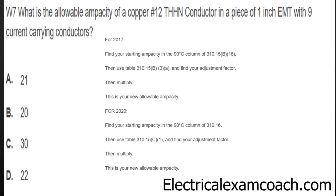Then you're going to use table 310.15 B3X-A to find your adjustment factor. Then all you have to do is multiply. When you multiply that out, that's your new allowable ampacity of this conductor. In this case, the answer ends up being A.